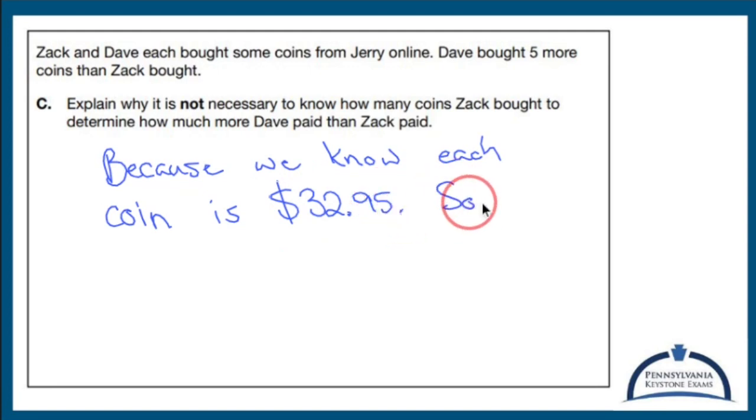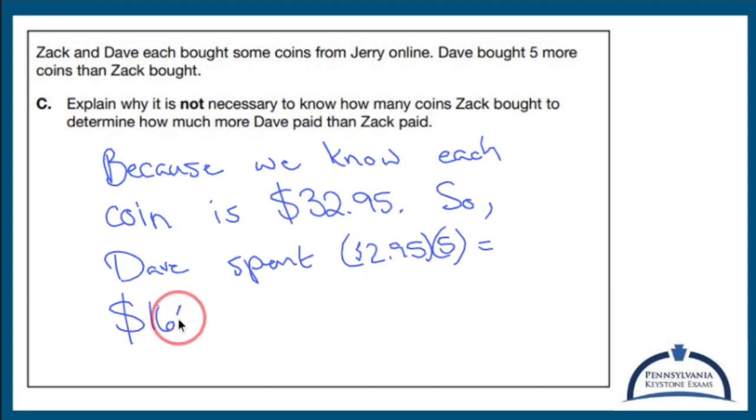So what, who bought more? Dave. Dave spent $32.95 times five, which is $164.75 more than Zack.